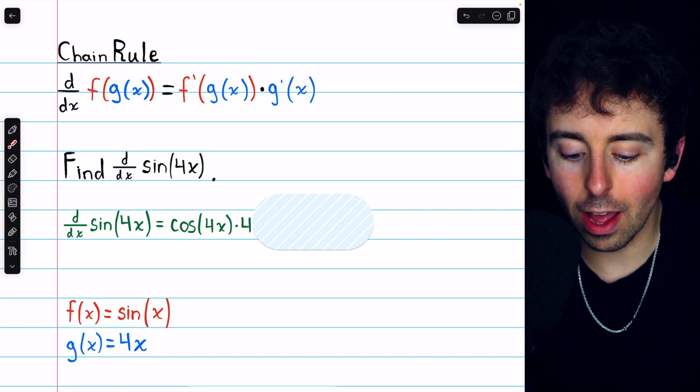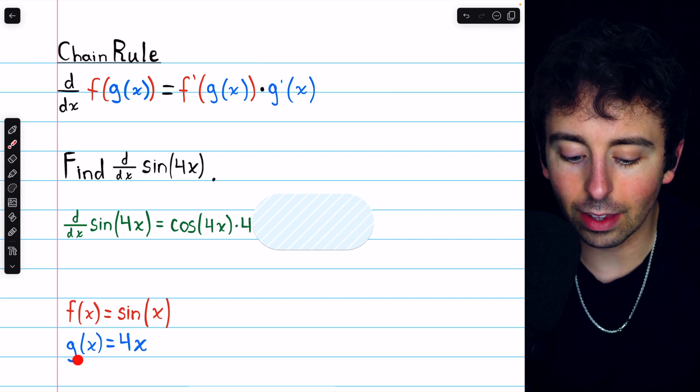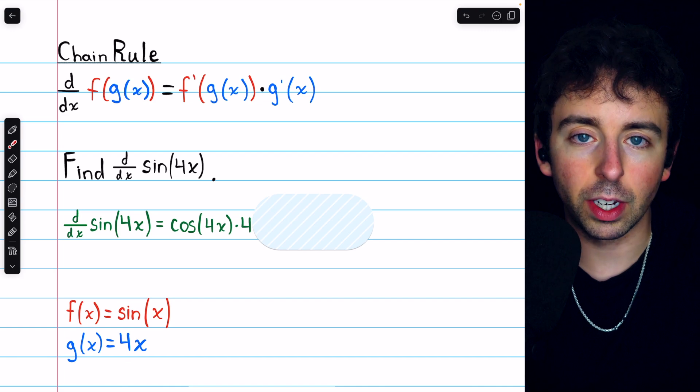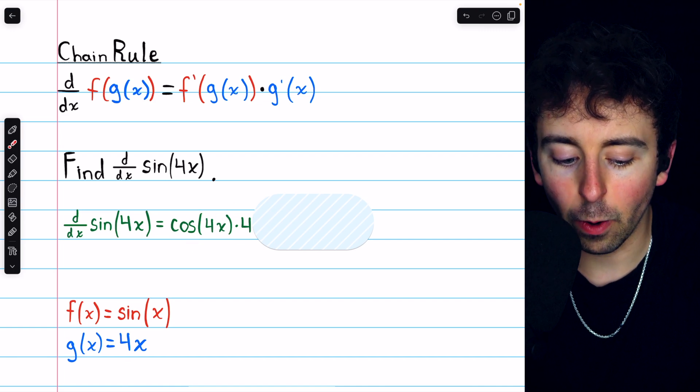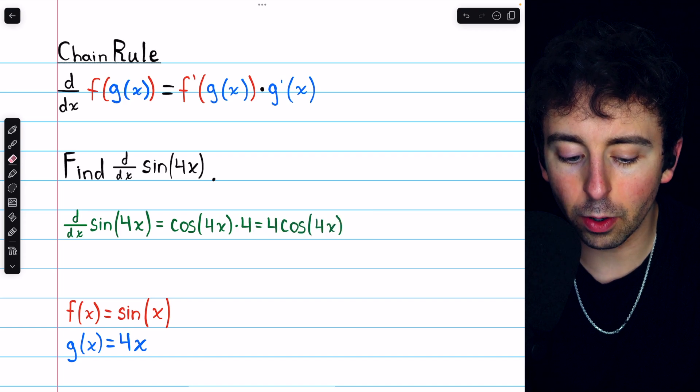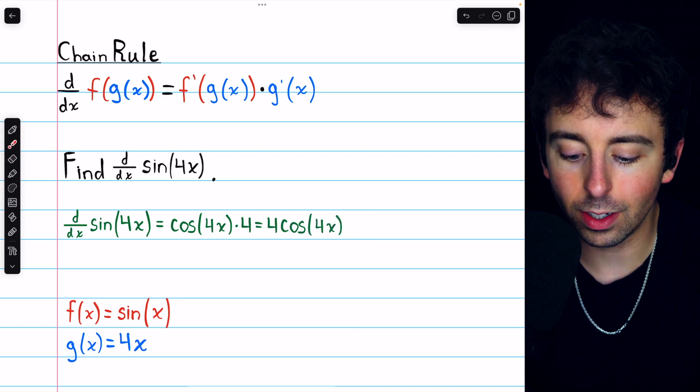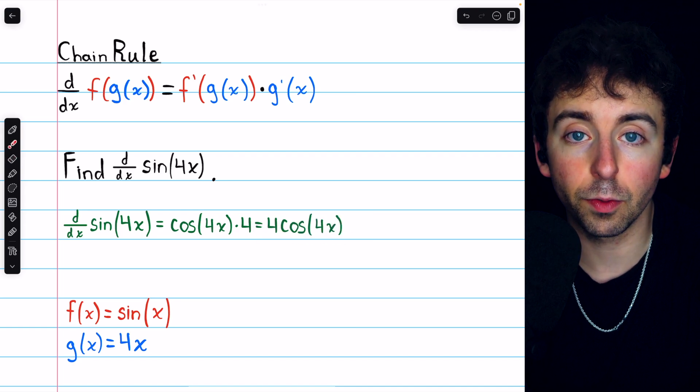But then, we multiply by g prime, the derivative of the inside function. The derivative of 4x is just 4, so that is our derivative, which we may prefer to write like this, 4 times cosine of 4x.